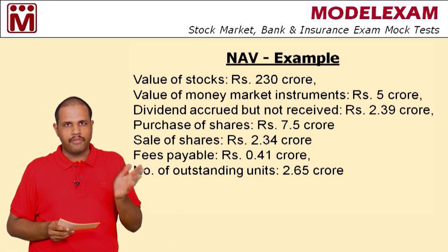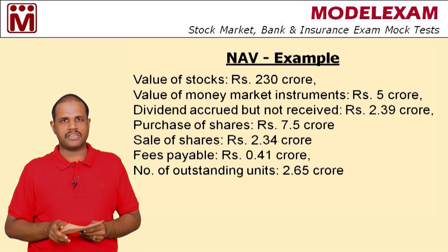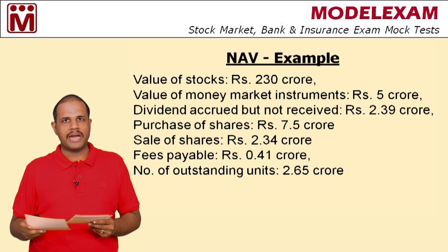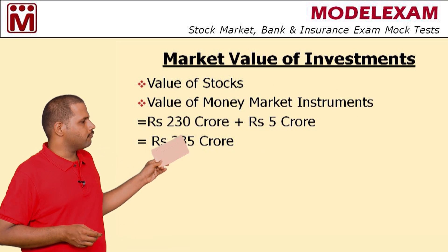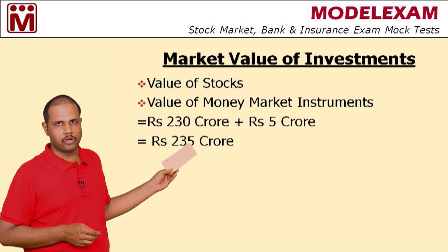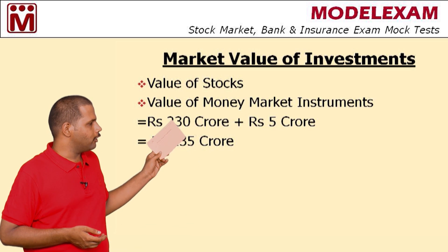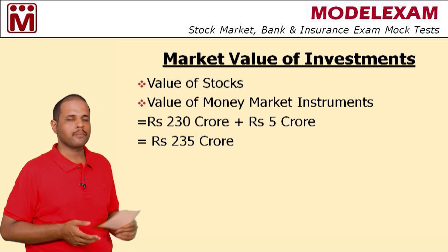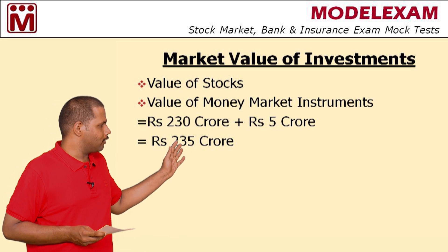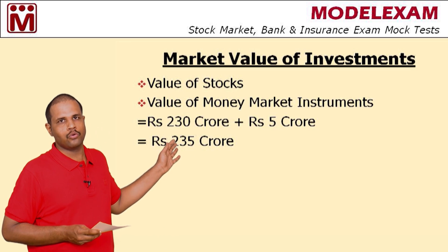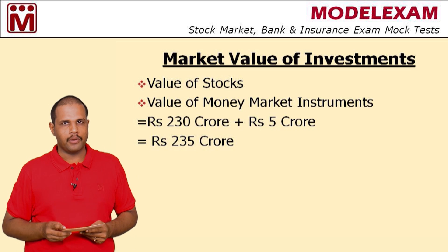Let us divide the formula into different segments. Starting with market value of investments: this consists of value of stocks and value of money market instruments, which is 230 crore plus 5 crore, giving us Rs. 235 crore. That is the first part of the formula.